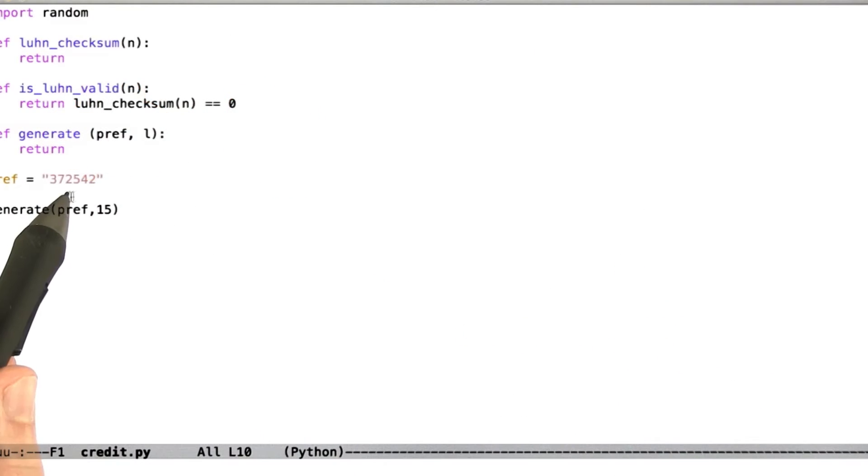Let's look at the code. You're writing a function called generate that takes the prefix and length. Your code will go here, and you might call it like this.